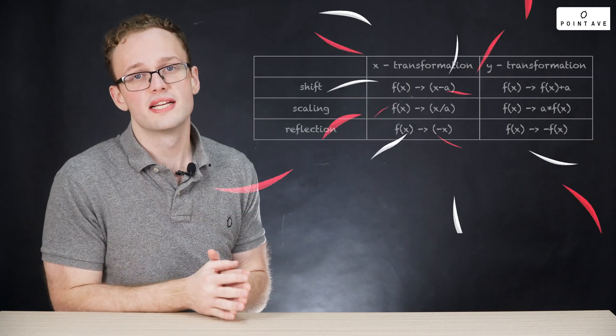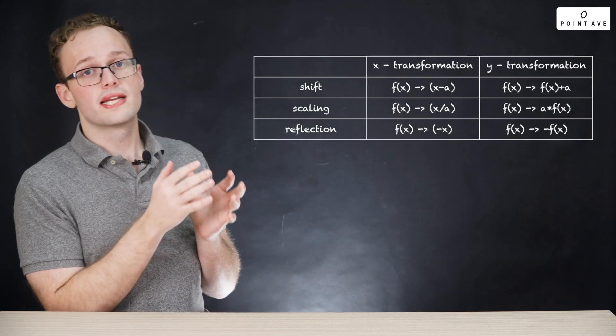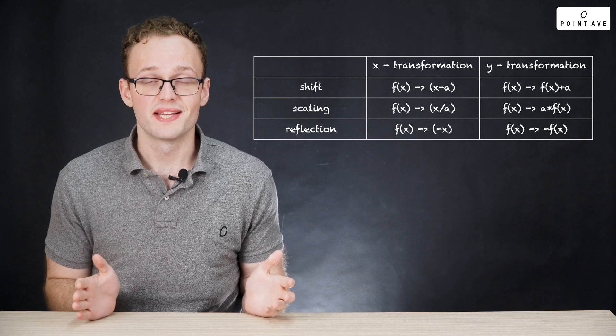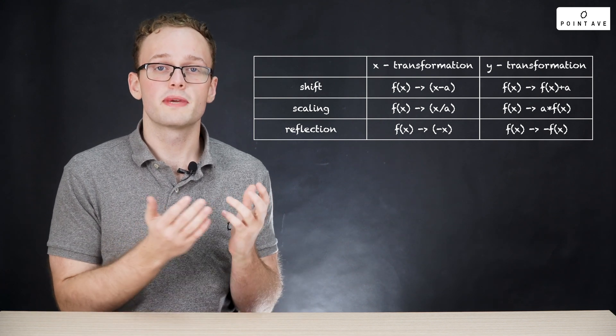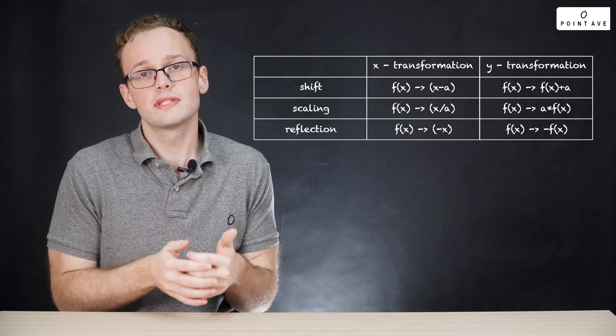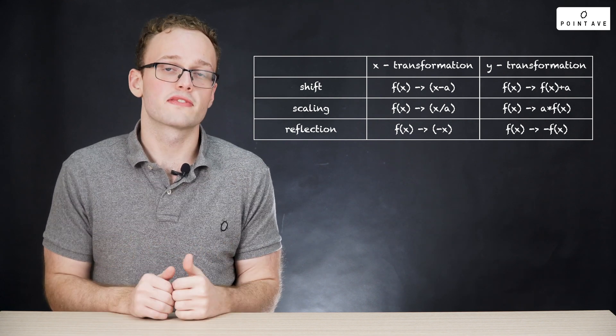Function transformations can be shifts, scalings, or reflections, each of which can occur in the x or y directions as we see in this table here. Now memorizing every point in this table is going to be a nightmare, so we're going to build an intuitive understanding so that we don't have to memorize it, but we can rather just use some rules and intuition to figure out any transformation we see.